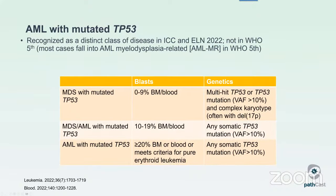AML with mutated TP53 is a distinct disease category in the ICC. In the WHO, AML with mutated TP53 is not a distinct entity because most cases fall into AML myelodysplasia-related by virtue of their complex karyotype. So in the WHO, TP53 is disease-defining in MDS but not in AML. For ICC, TP53 is disease-defining for MDS, MDS slash AML, and AML with TP53. In MDS with blasts less than 10%, you require multi-hit TP53. But once you reach past the 10% threshold, any somatic mutation with a variant allele frequency of more than 10% puts you in this category.